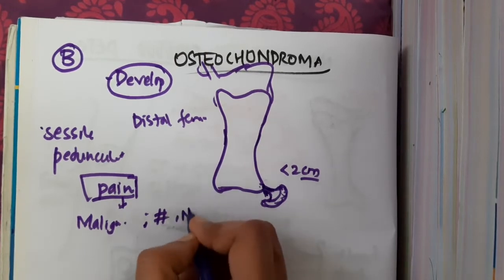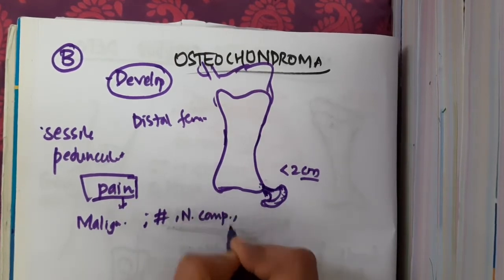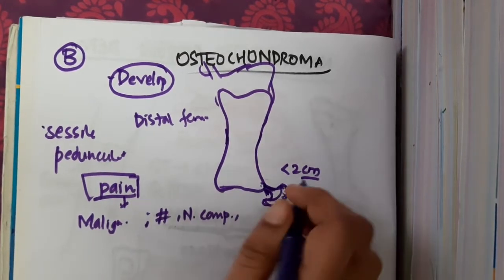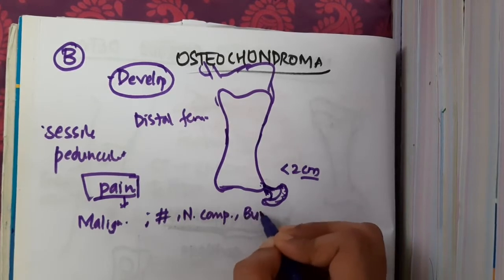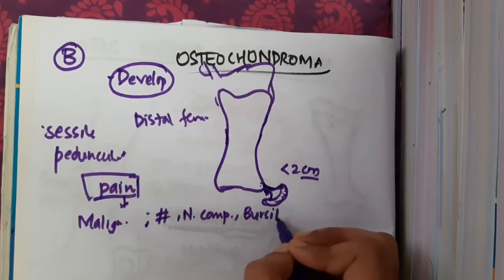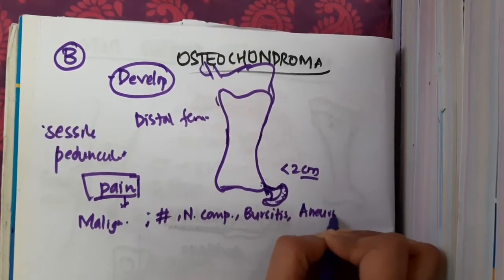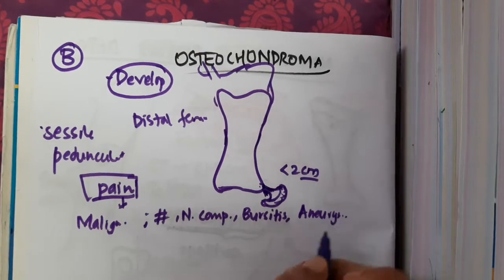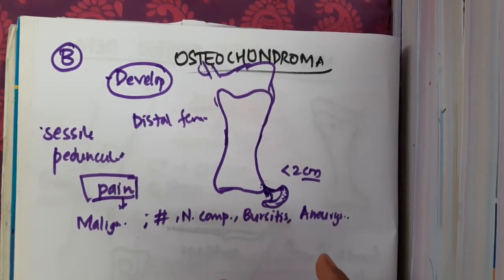Other causes of pain include nerve compression, bursitis, or aneurysms. All these can increase the pain associated with osteochondroma.